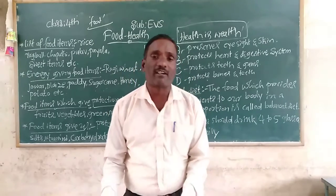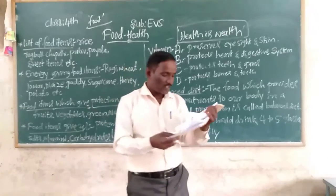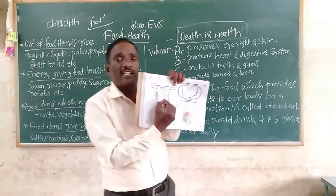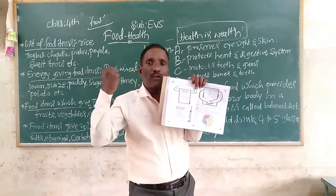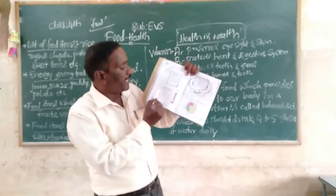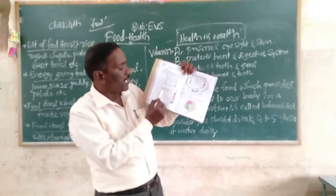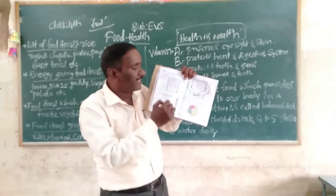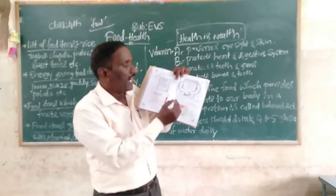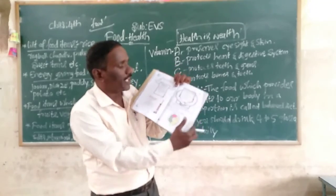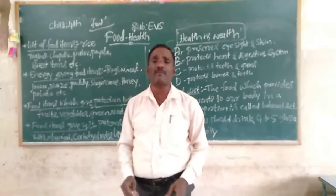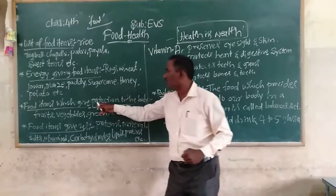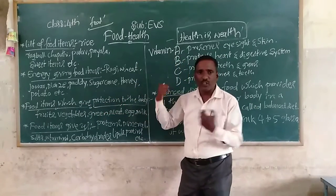Let's look at your textbook, page number 63. Look here — energy, how to give energy to our body, energy-giving food items. Food items which help us to grow — you read this textbook and write the suitable answers. And food items which give protection to the body — which food items give protection to our body?